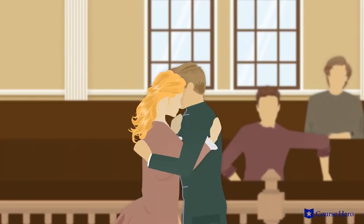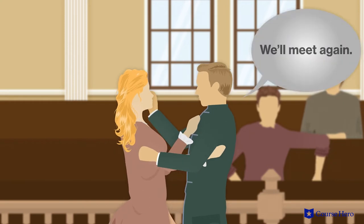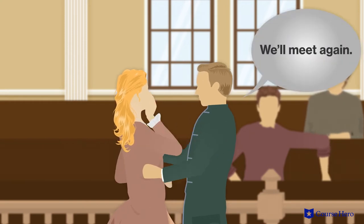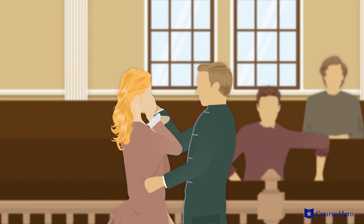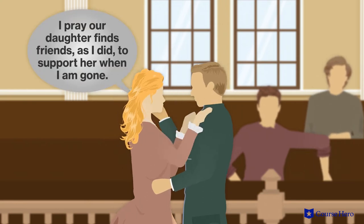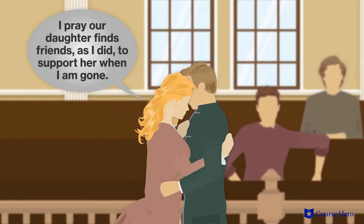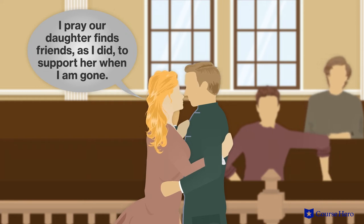As the courtroom empties, Lucy asks to hold her husband one more time. Wrapping her in his arms, Charles Darnay tells her they'll meet again, then sends his daughter a blessing and a kiss. Lucy laments she will not last long without him and she will pray their daughter finds friends as she did to support her when Lucy is gone.